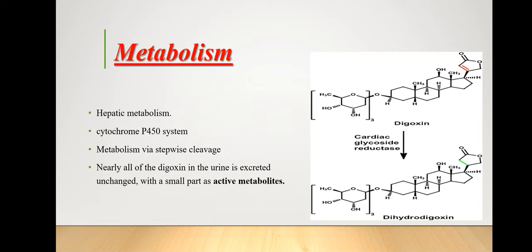The glycoside molecule is formed from two parts: one is the sugar moiety and the other is the non-sugar component, the lactone ring. Almost 30 percent of digoxin is metabolized in the body by all metabolizing systems, and the rest is excreted in unchanged form. The active metabolite of digoxin is dihydrodigoxin, though its clinical significance remains to be resolved.